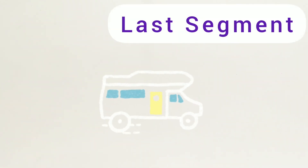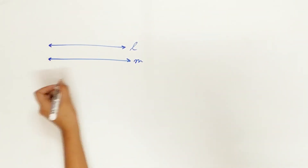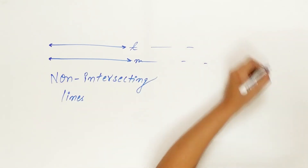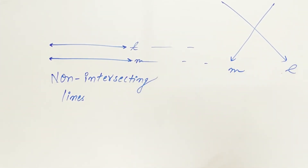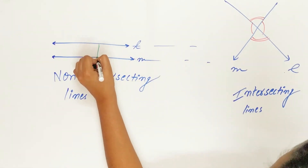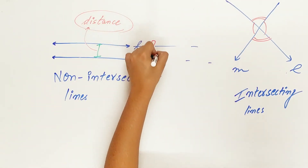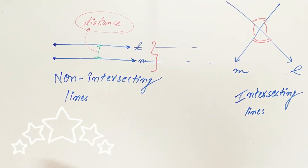Let's move to the last segment of this video. Let L and M be two lines that do not intersect each other — they are parallel, hence non-intersecting lines. If lines L and M intersect each other, they are intersecting lines. The distance between two parallel or non-intersecting lines is always the same. This brings us to the end of the fundamentals of lines and angles.